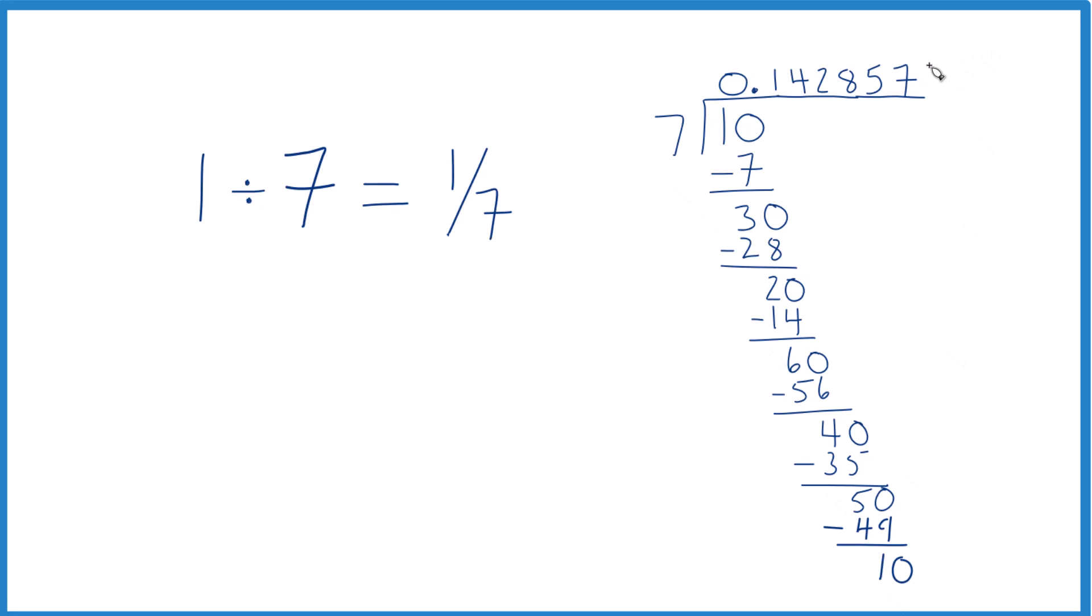7 goes into 10 one time. And we're starting the fraction over. So this whole thing here, actually it repeats. It keeps repeating as we divide 1 by 7. So we end up with 0.142857 and then that starts over, just keeps repeating again.